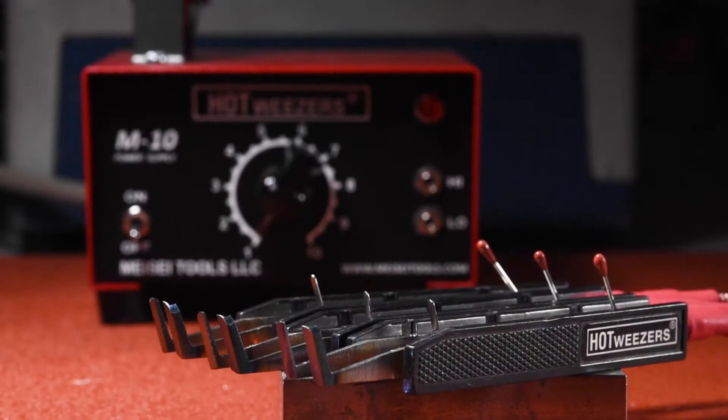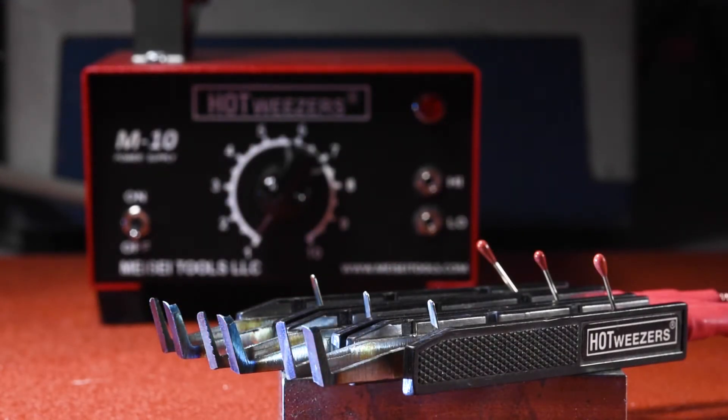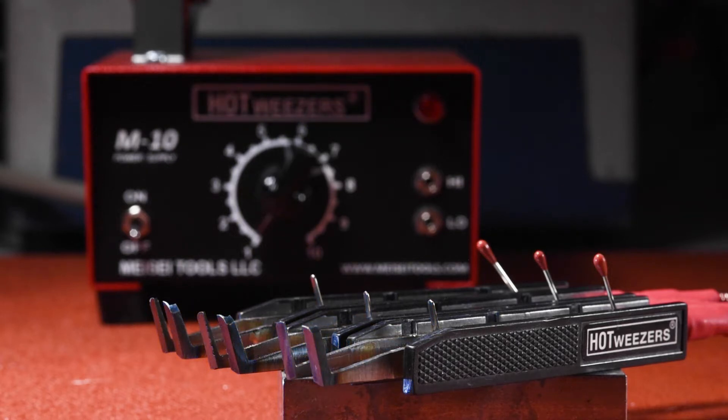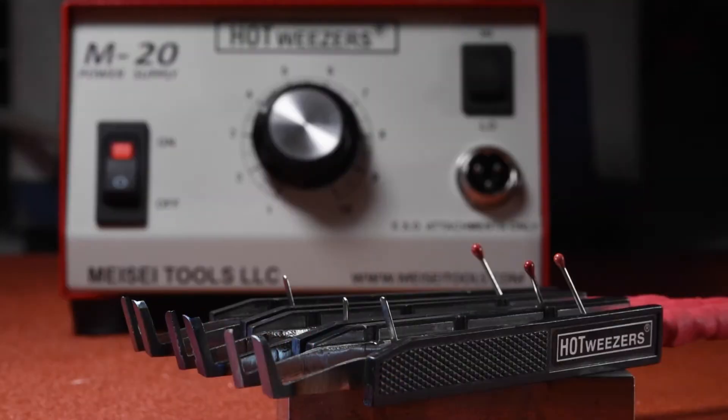Messe hot tweezers come in two lines. The 4 series, our standard line, is compatible with the M10 power supply. And the 7 series, our electrostatic discharge protected line, known as ESD, is compatible with the M20 power supply and complies with both MIL standard and ANSI standard.